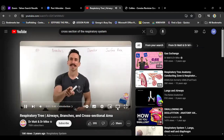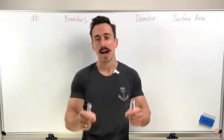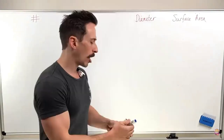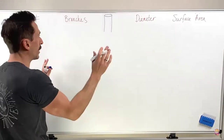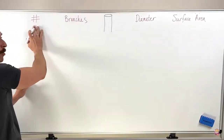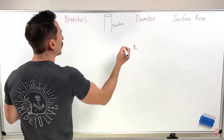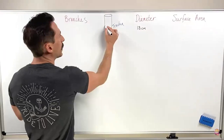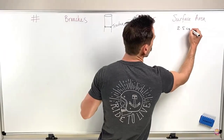An external video is playing showing the branching structure of the airways. It covers the number of branches, the diameter of the tubes, and changes in surface area as the airways divide — starting from the trachea through the bronchi and into the bronchioles.